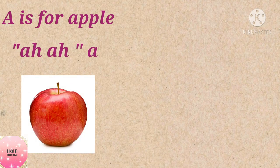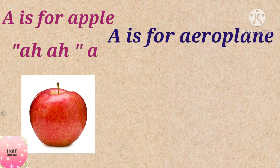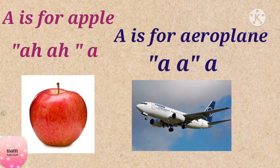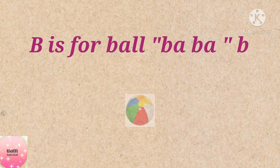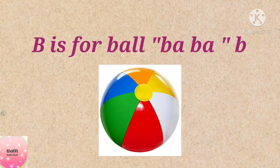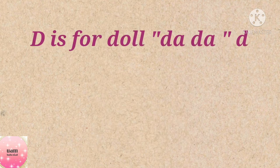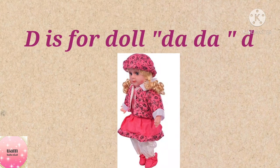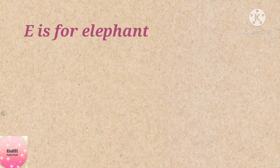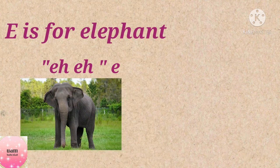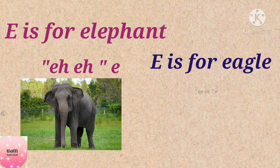A is for apple, a a a. A is for aeroplane, a a a. B is for ball, b b b. C is for cat, c c. D is for doll, d d. E is for elephant, e e.